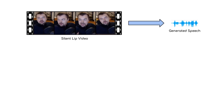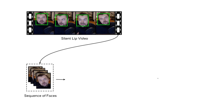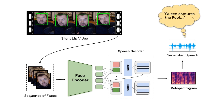We model the generation of speech from lip movements as a sequence-to-sequence problem. Given a silent talking face video, we extract the face in each video frame using a face detector. We feed these sequences of face crops to our spatiotemporal face encoder, followed by a speech decoder. From our generated MEL spectrogram, we employ a standard vocoder to get the raw speech.